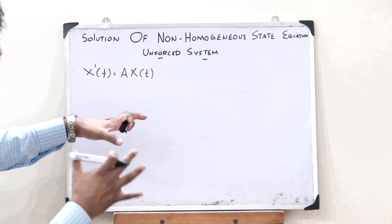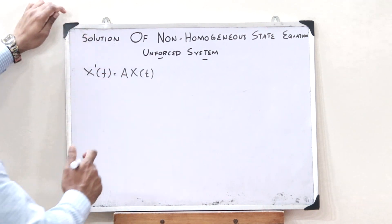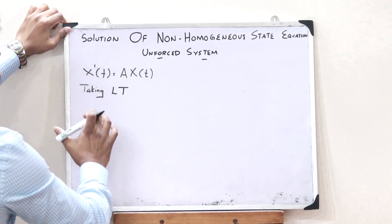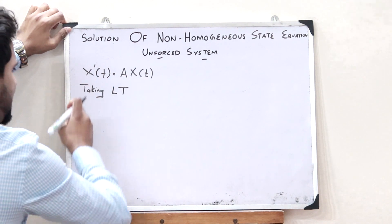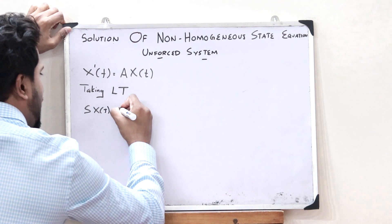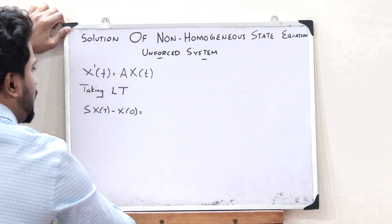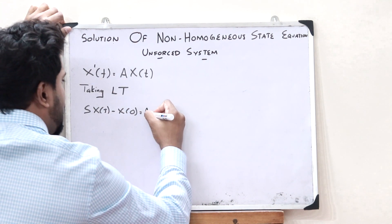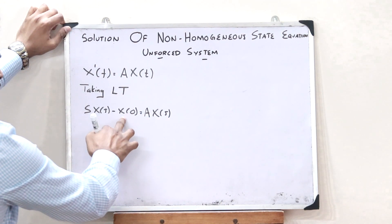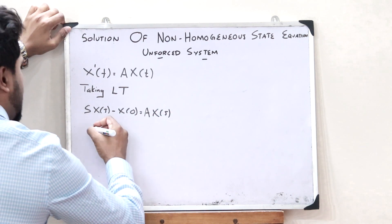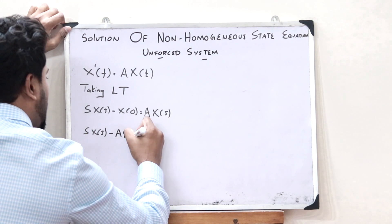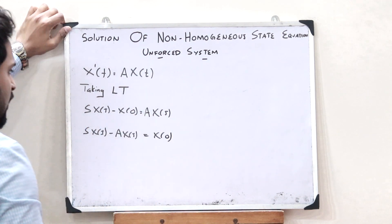So now let us simply take the Laplace transform on both sides. Taking the Laplace transform on both sides, we would get the Laplace transform of x'(t), which is simply s·X(s) minus x(0), and on the right side we have A·X(s).